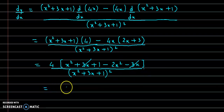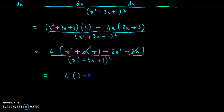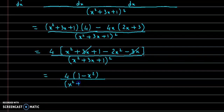So we have 4 times: 1 and x square minus 2x square gives minus x square, divided by x square plus 3x plus 1 the whole square. So this is the value for dy by dx.